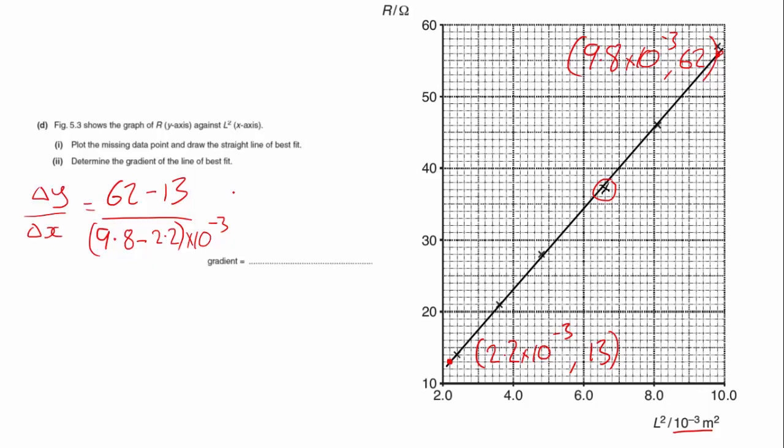And my gradient comes out as being 6,447, so that's going to be 6450. I'm not going to worry about the units, although the units would be ohms per meter squared. 6450.